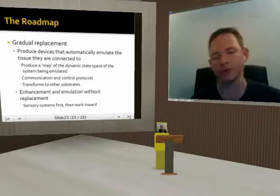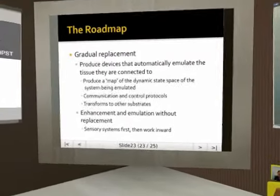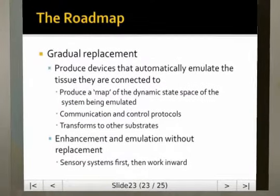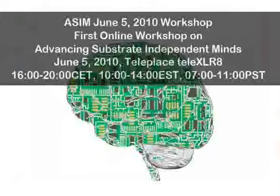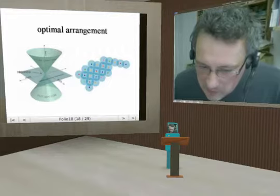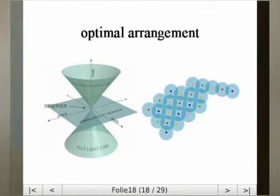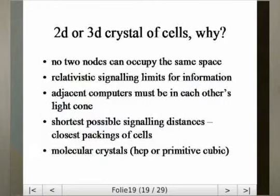This is my perspective on the roadmap. I share the idea that gradual replacement is probably the way things are going to go, simply because this is the way the technology is going to develop anyway. Why is this an optimal configuration? As an outline of a proof: you're operating in a relativistic universe, so we have signaling delays and your system has to operate with each other within light cones. No two nodes can occupy the same space, and relativistic signaling limits information.